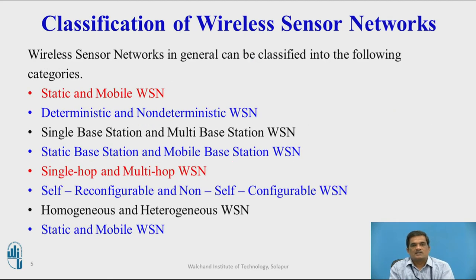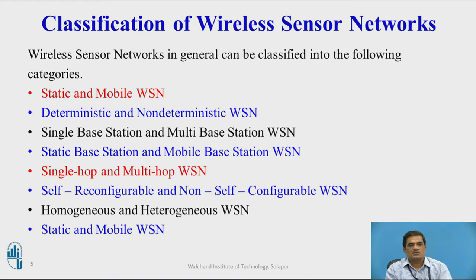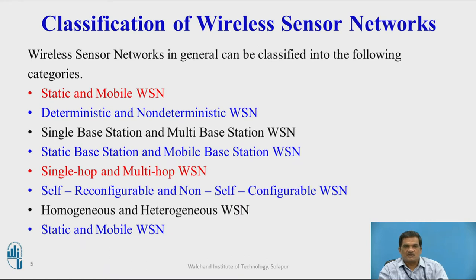Now we will discuss the classification of wireless sensor networks. Wireless sensor networks are classified based on the nature of the nodes, configurations, deployment, type of sensors, architecture, and sensing capacity.